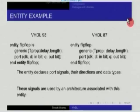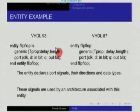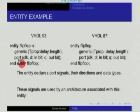Here is an example of an entity: 'entity flip-flop is' — so the name is flip-flop. We declare a generic called T_prop (propagation delay) whose type is delay_length, declared earlier as of type time. The port signals clock and D are inputs of type bit; a signal Q will be the output and will be of type bit. All signals connected to the flip-flop are described in this port list; any generic required for simulating its behavior is declared in the generic list, which is optional. Then 'END entity flip-flop' — notice that in VHDL 87 you would have just said 'END flip-flop'. The entity declares port signals, their directions (input or output), and data type.